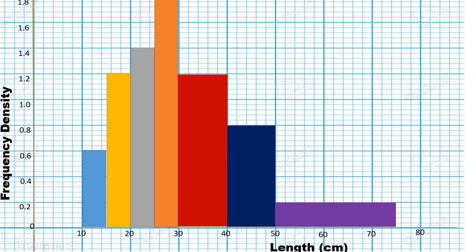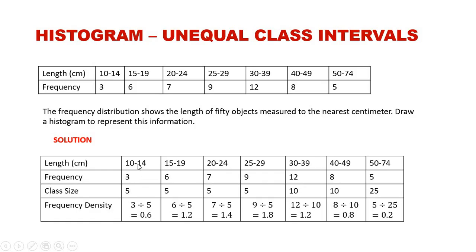Now we prepare the histogram plotting frequency density against length. For the scale I'm using 1 cm to 0.2 on the frequency density axis, giving values 0.2, 0.4, 0.6, 0.8, 1.0, 1.2, 1.4, 1.6, 1.8. On the length axis I'm using 1 cm to 10 units: 10, 20, 30, 40, 50, 60, 70, 80.